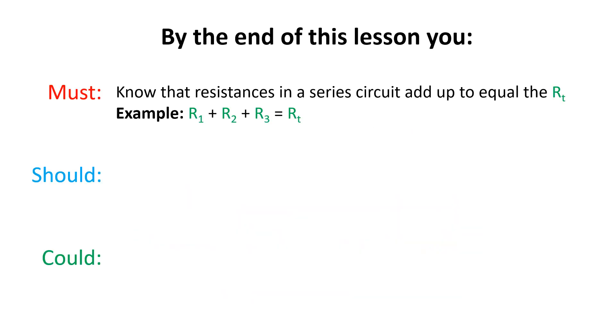By the end of this lesson, you must know that resistances in a series circuit add up to equal resistance total or RT. For example, R1 plus R2 plus R3 equals resistance total.